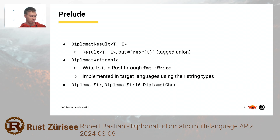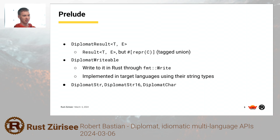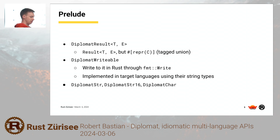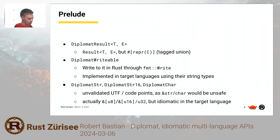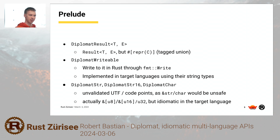diplomat_str, diplomat_str16, and diplomat_char are required because the str and char types in Rust have the invariant that they need to be valid UTF-8 or a valid Unicode code point. If you pass a random sequence of bytes into Rust and Rust interprets that as a str, that's UB — so you don't want this. Basically these are aliases for slice of u8, slice of u16, and u32, but they tell Diplomat that this slice of u16 is actually a UTF-16 string, so in the target language we can make it nice and use string types.